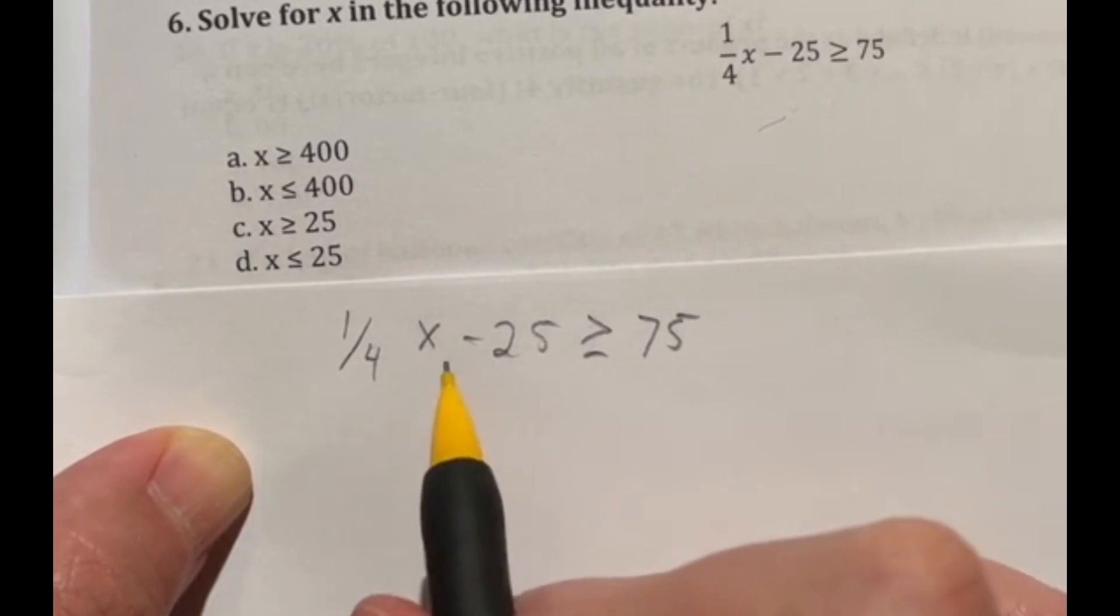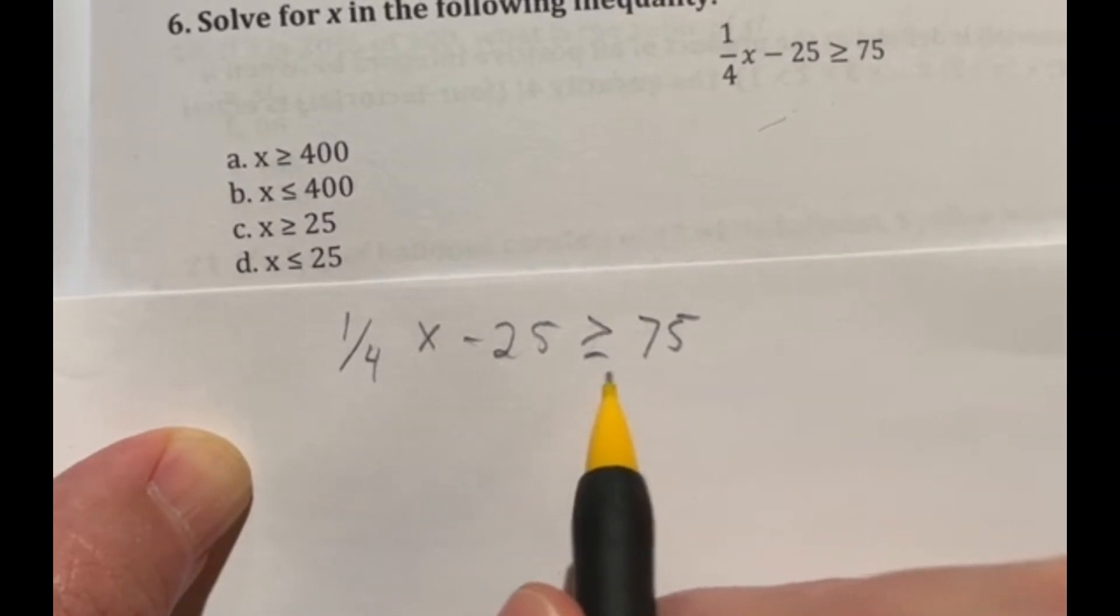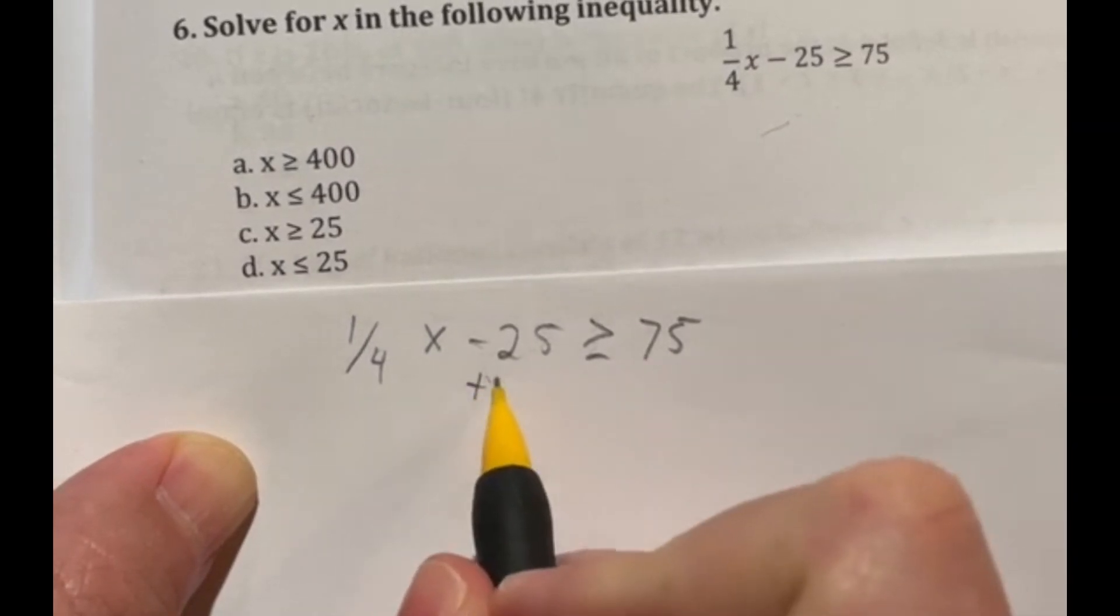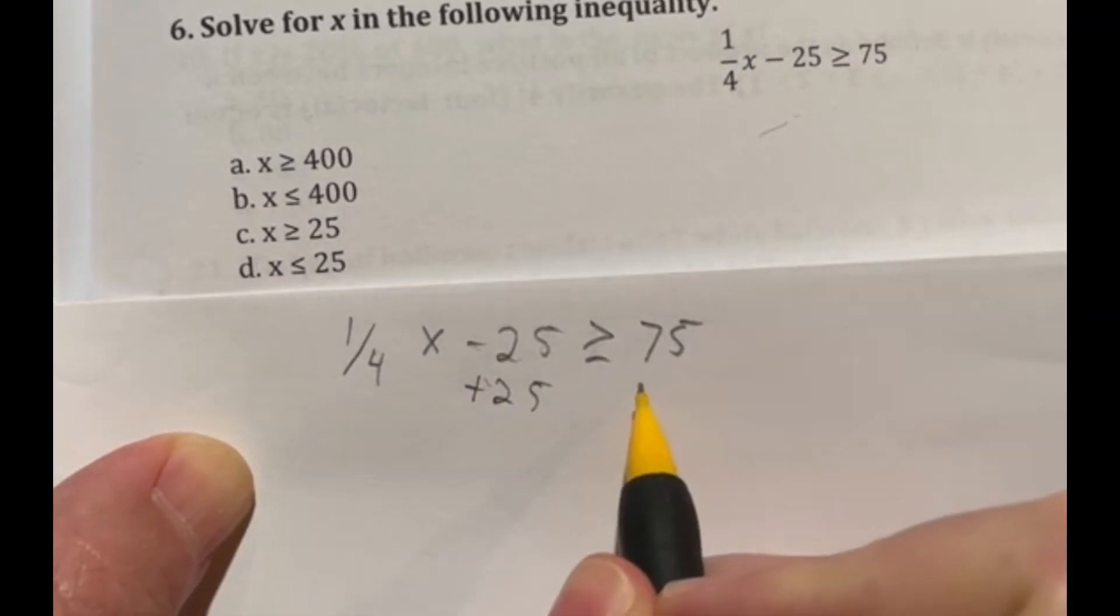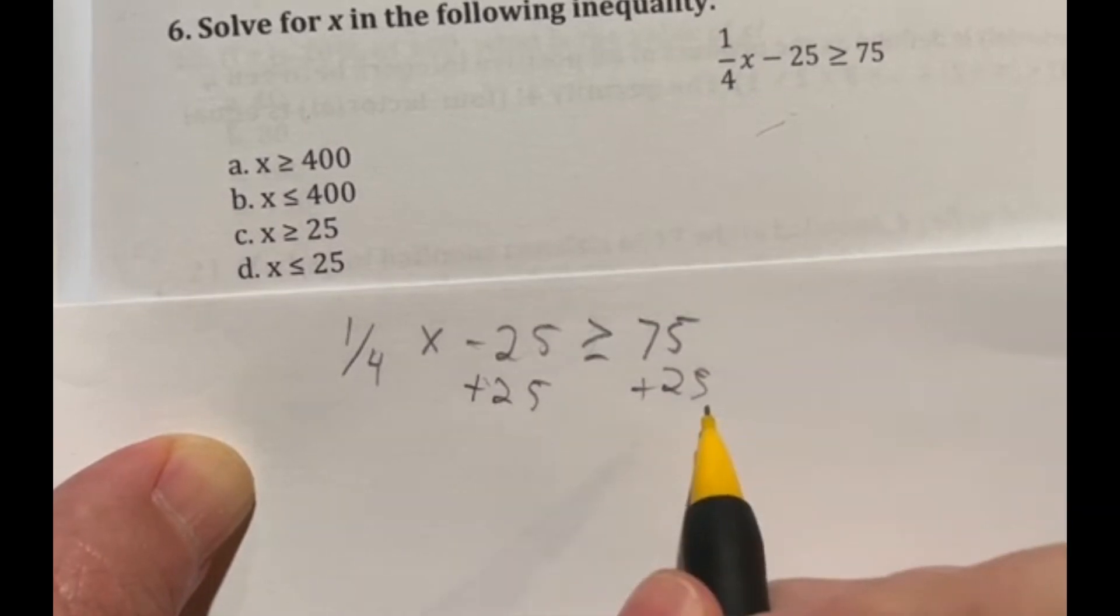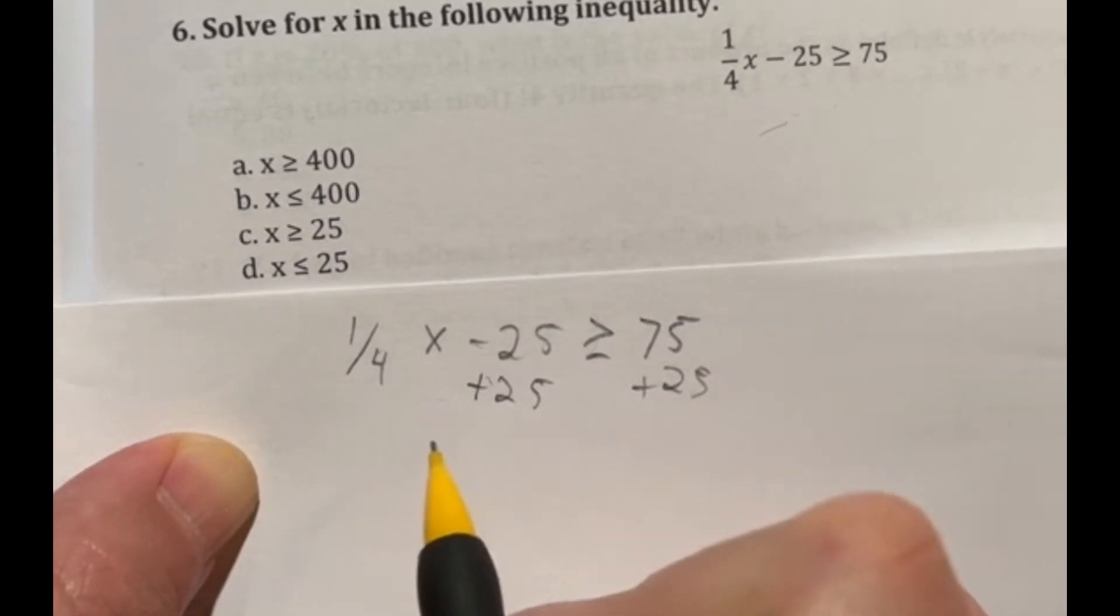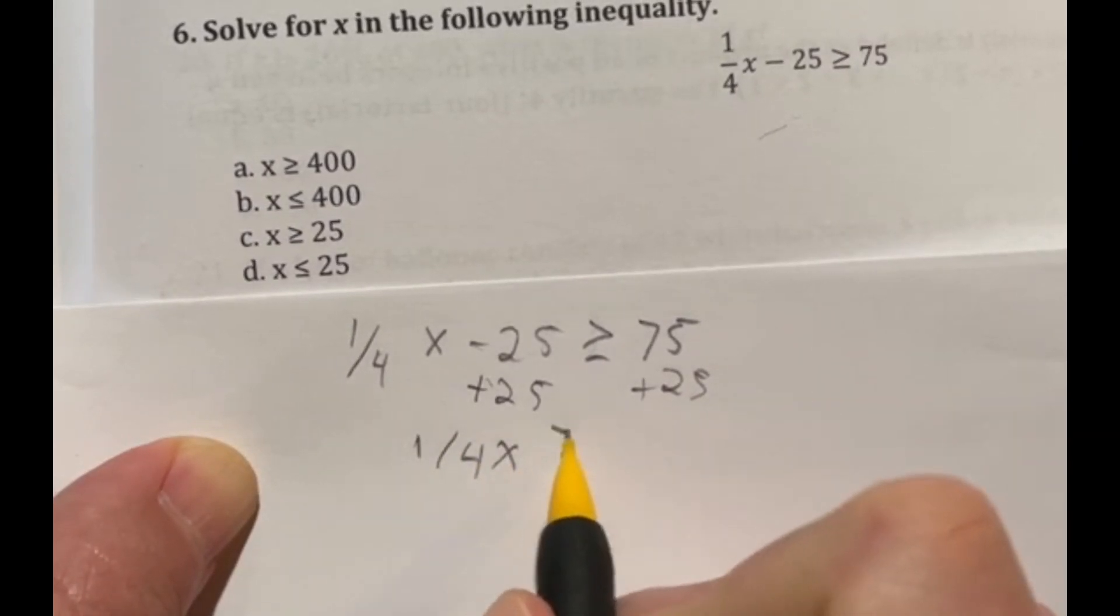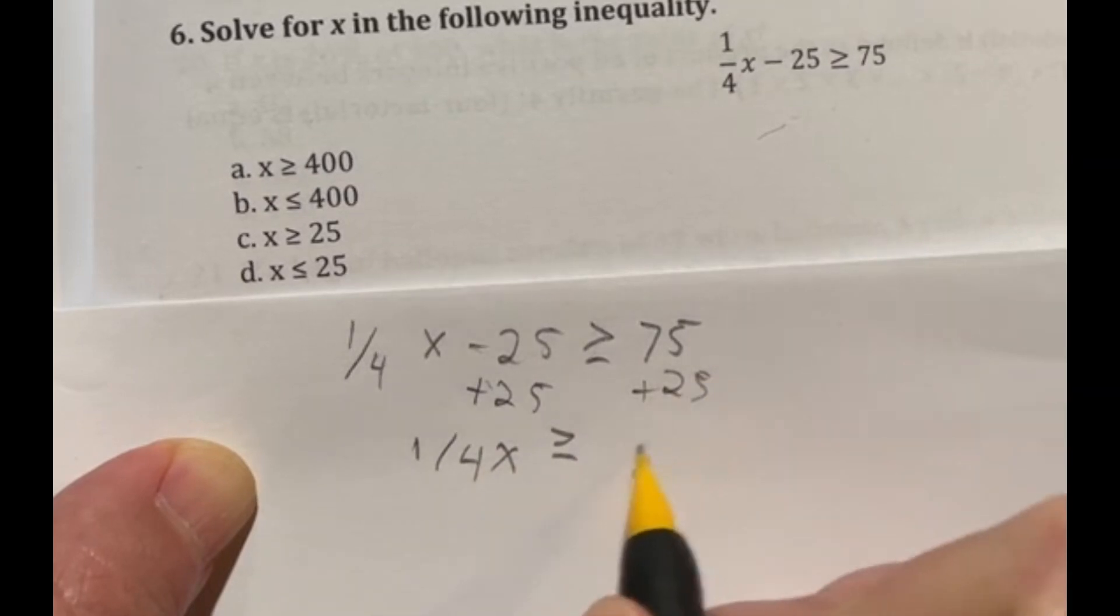So it says right now one fourth x minus 25 is greater than or equal to 75. Our first step is going to be to move this number away from the x. Currently, it's being subtracted from the x. So the opposite of subtraction is adding. So I'm adding the 25 over to this side, that's going to leave us with one fourth x is greater than or equal to 100.